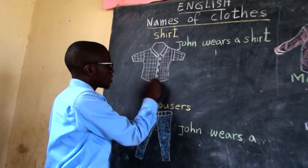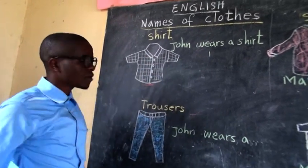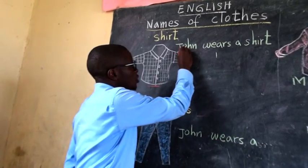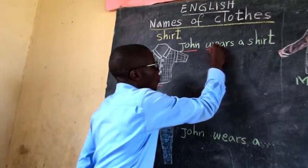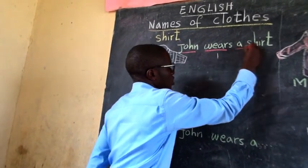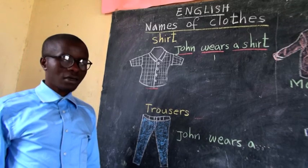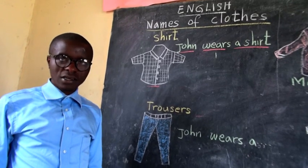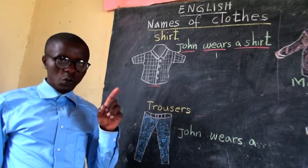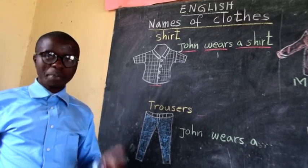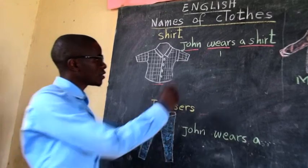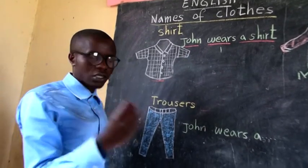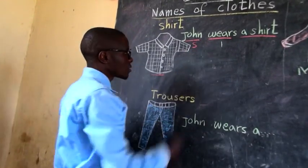This is a shirt. You can say: John wears a shirt. As I said, sentences should have many parts. Somebody who does an action is a subject.